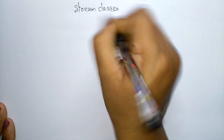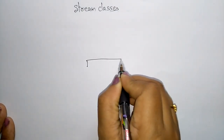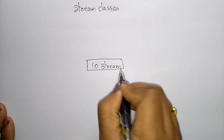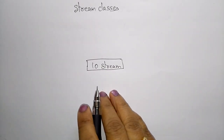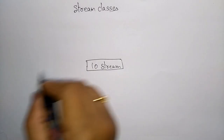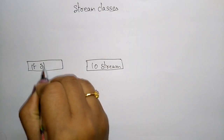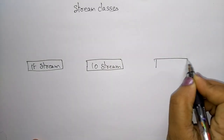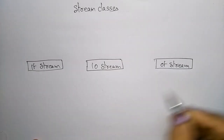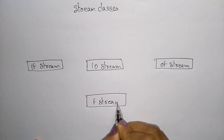Now coming to the stream classes. The iostream is a standard function library which holds all input and output functions like cin and cout. Under the file stream classes, ifstream is for input, ofstream is for output, and fstream handles both input and output operations on files.